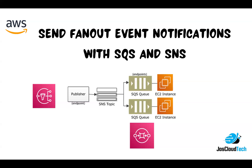I'll be showing you how we can send fanout event notifications. We will jump onto the AWS console, first go to SNS, create a topic, and then create two separate queues for forwarding messages to two different endpoints. I won't go into full EC2 detail — I'll just show you how to configure SNS and SQS.